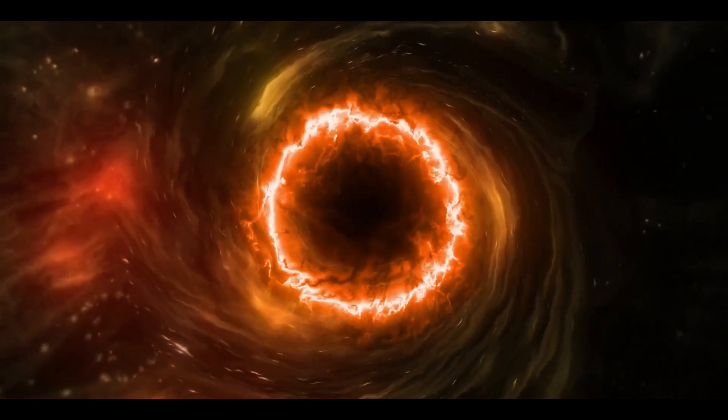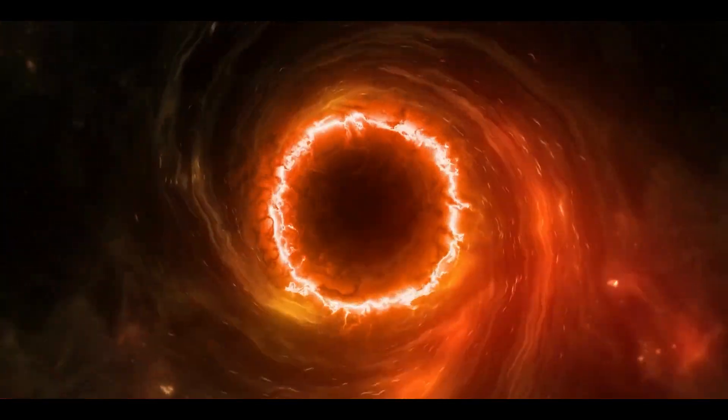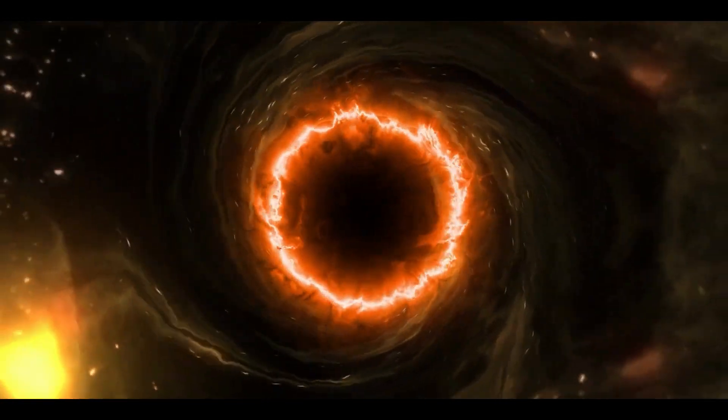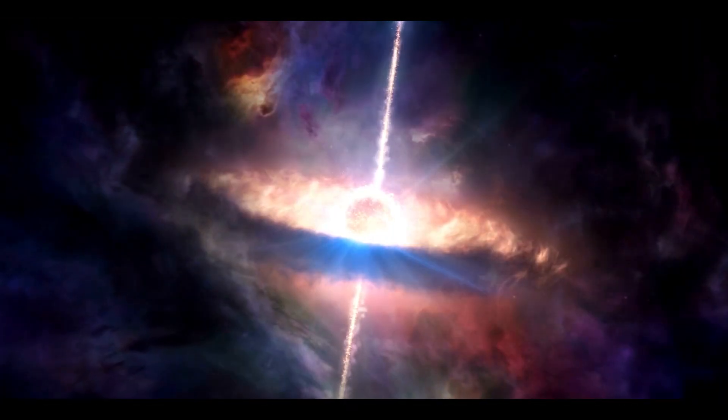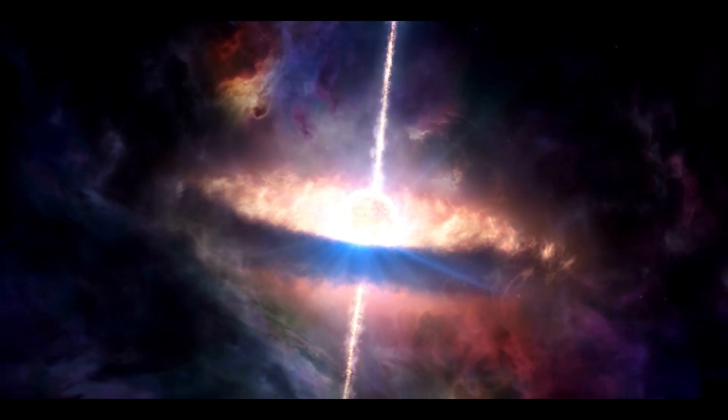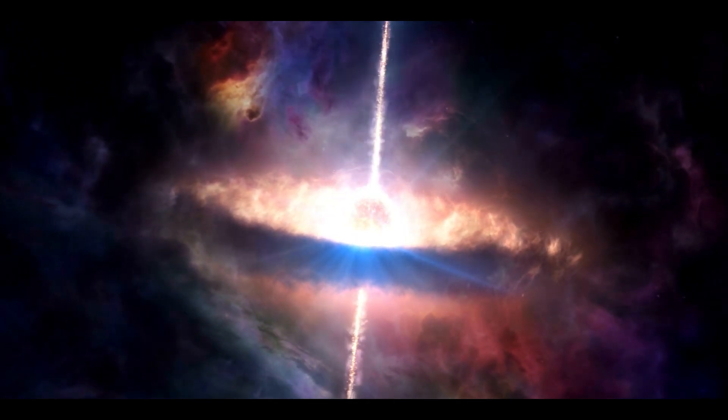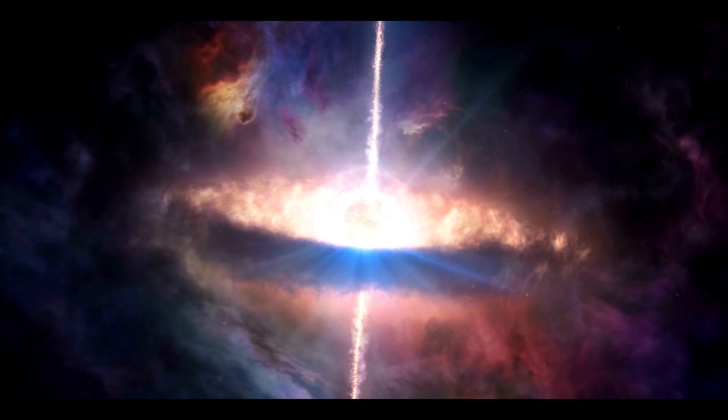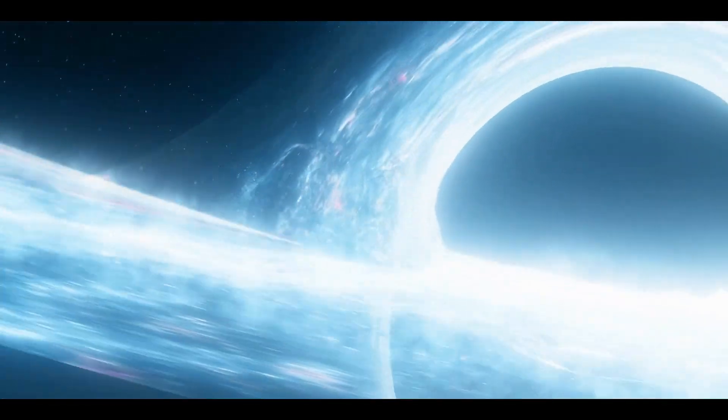Rather than falling directly into a black hole, material sucked into one is drawn into a swirling disk, where it is inexorably pulled towards it. This disk of matter becomes so hot that it releases a large amount of energy across the electromagnetic spectrum, which is what makes AGN so bright.